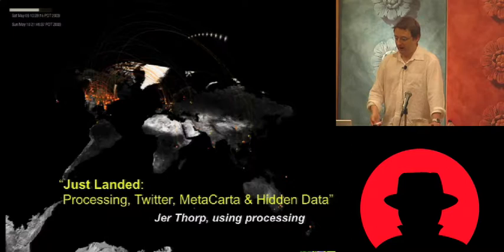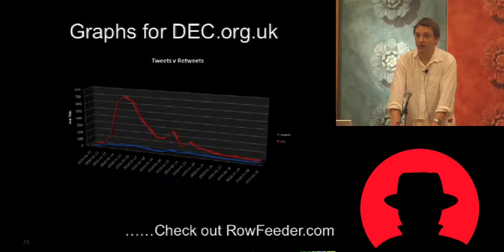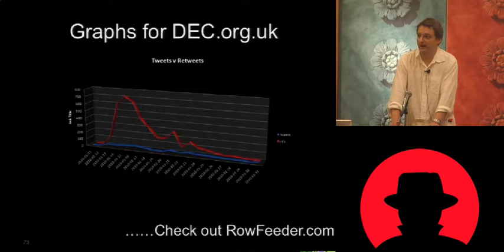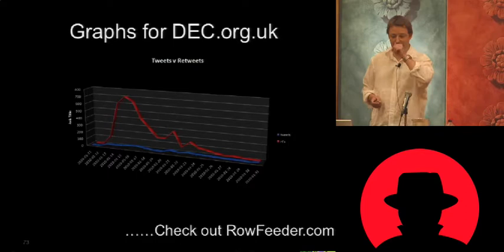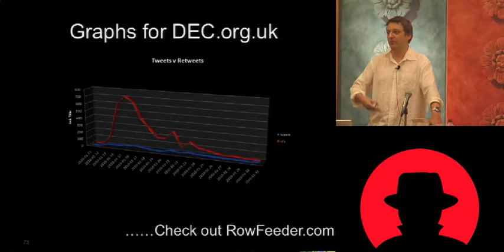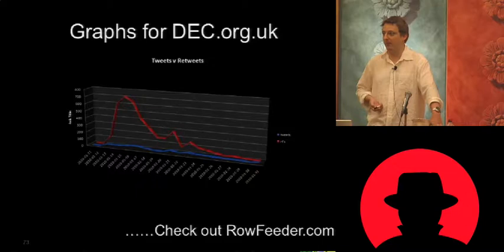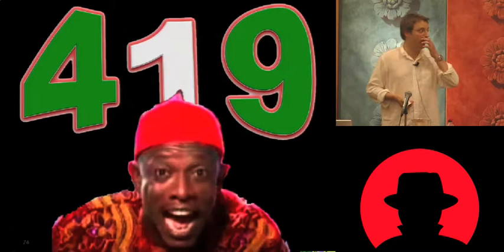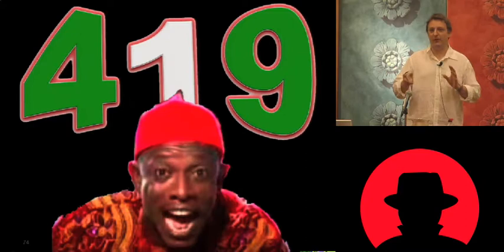Also with Twitter — the DEC charity in the UK was looking at analyzing their social media activity for the Haiti disaster. They wanted to see how many tweets they were making, how many were being retweeted. With those same API calls I was able to generate those graphs. For a more professional approach, check out Rowfeeder by Damon Cortese — it's a really sweet product. On to another use case focusing more on the Nigerian crime aspect.